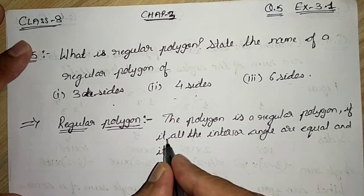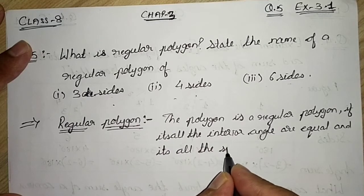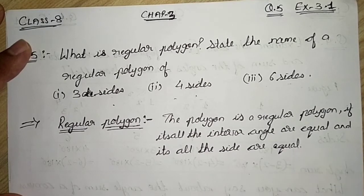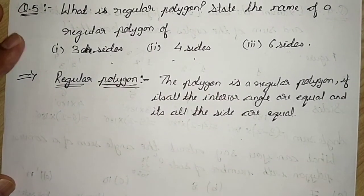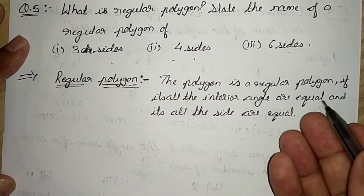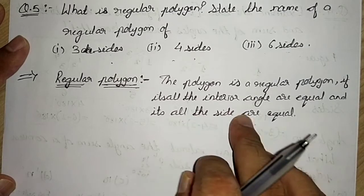and all the sides are equal. So if a polygon is called a regular polygon, then all its interior angles will be equal and all the sides will be equal.